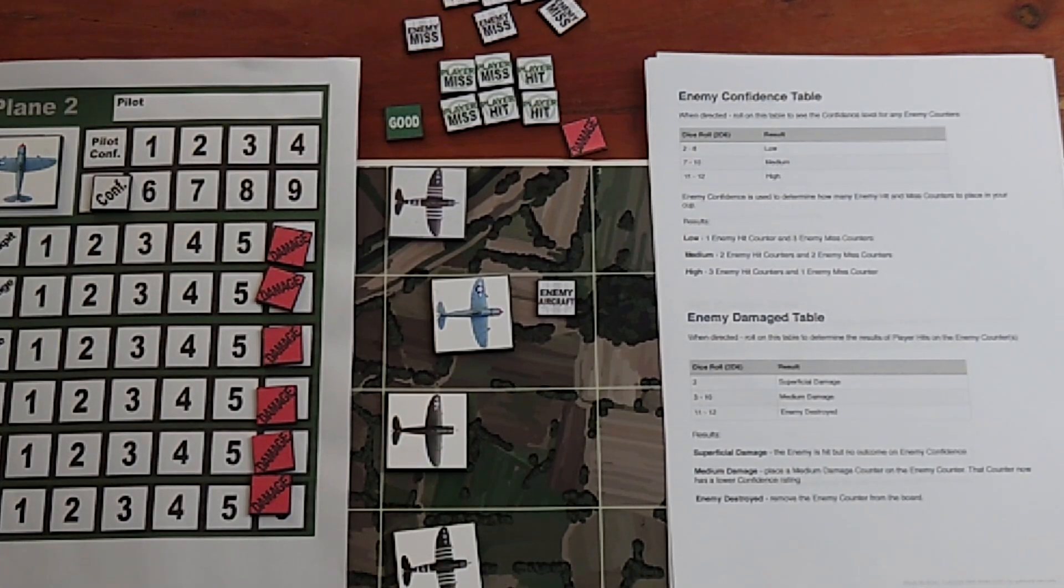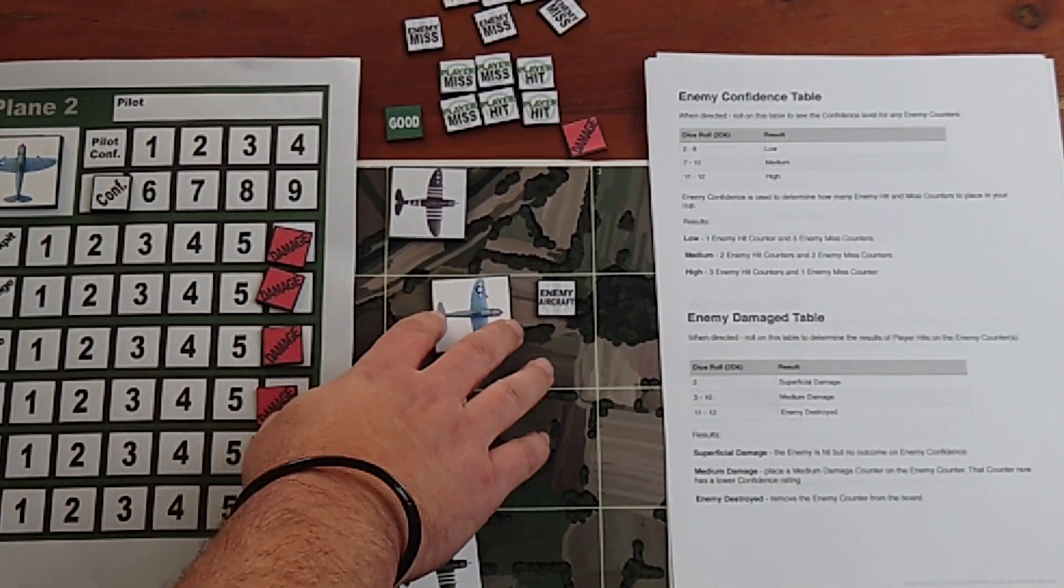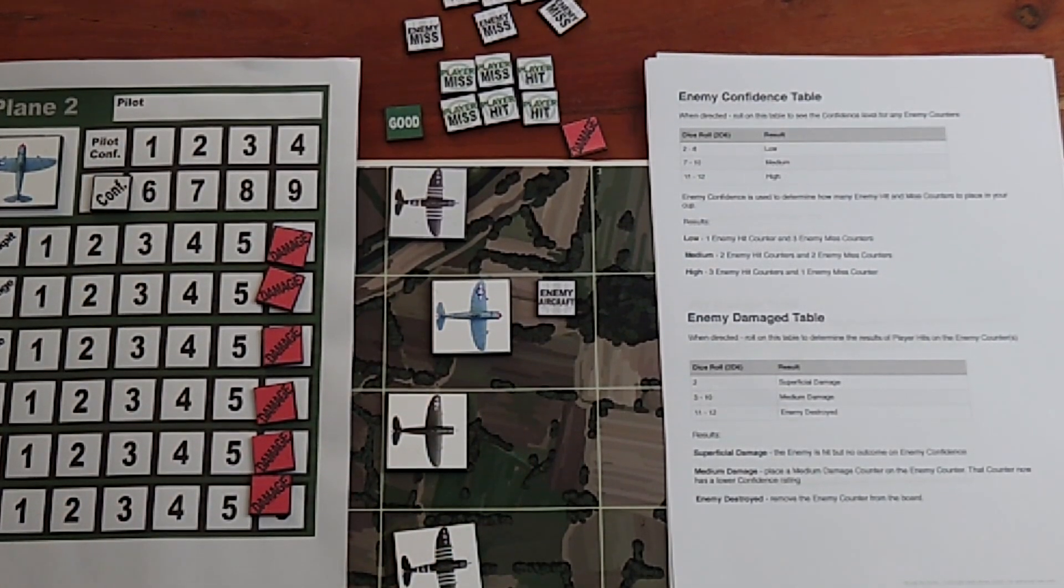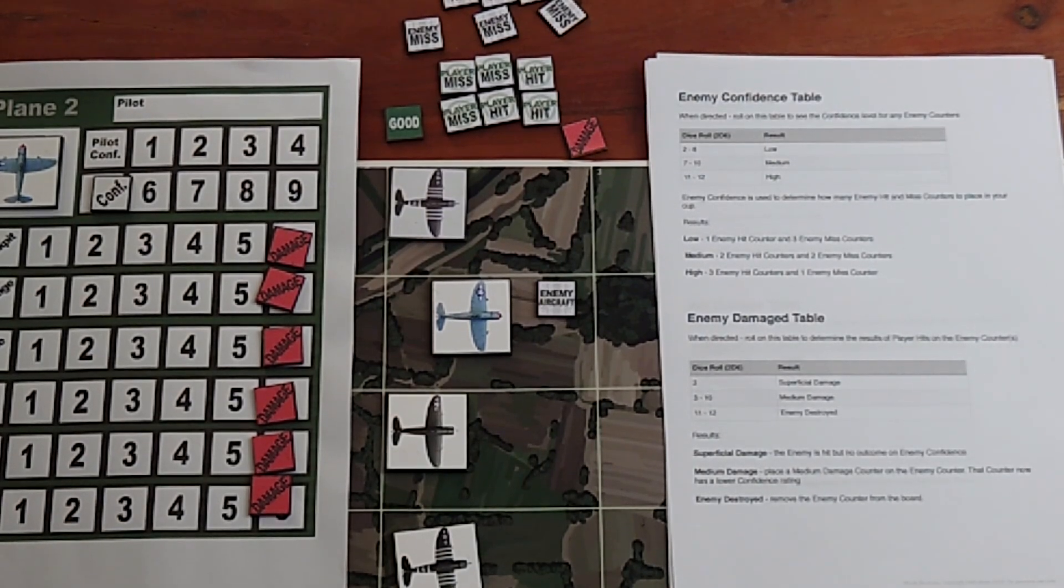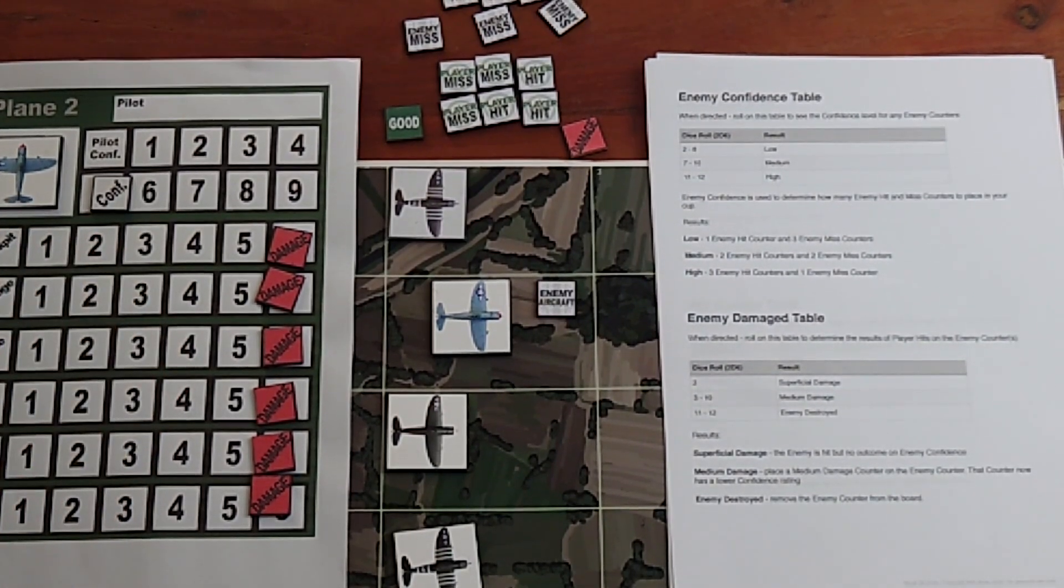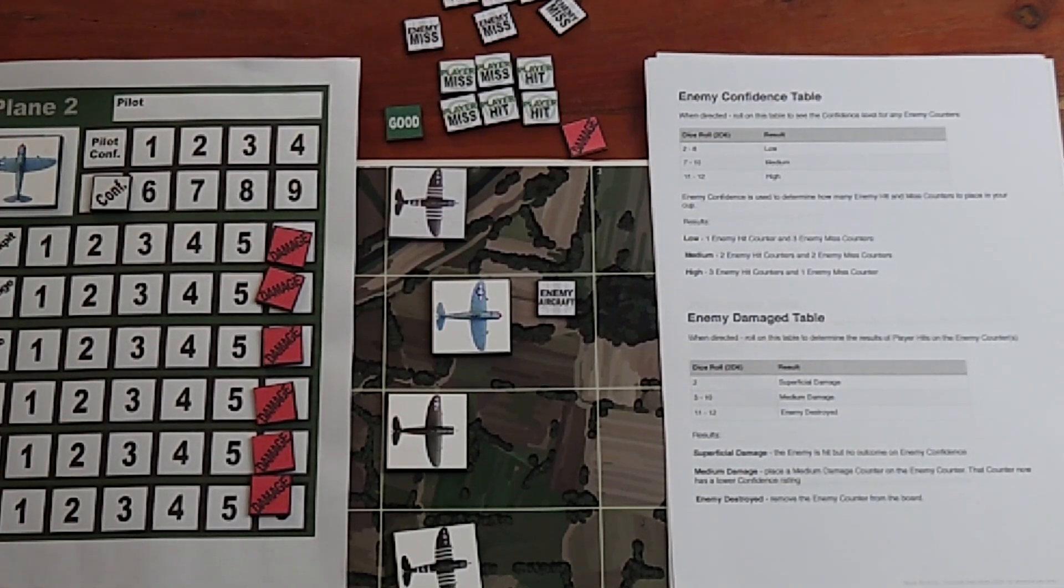This aircraft here, plane number two, has encountered enemy aircraft in that zone as a result of rolling on the zone events table. There's a separate video that explains when you enter a new zone the process and steps you go through. As a result of that, we've got enemy aircraft here, so in this video I'm just going to talk about actually the combat resolution.